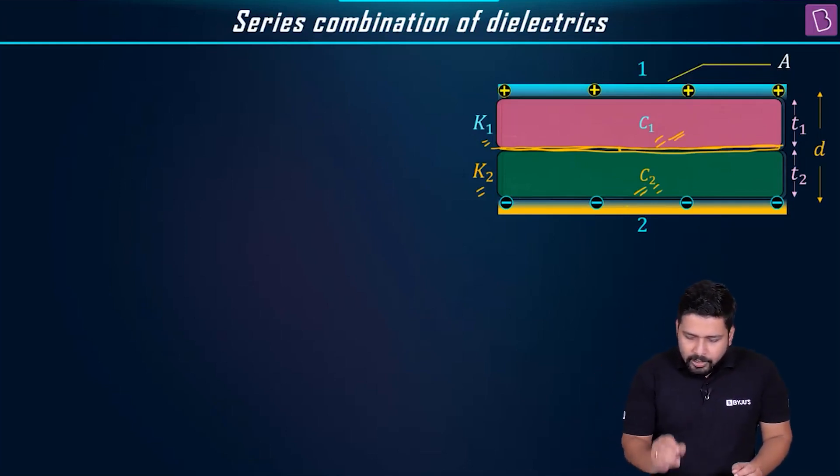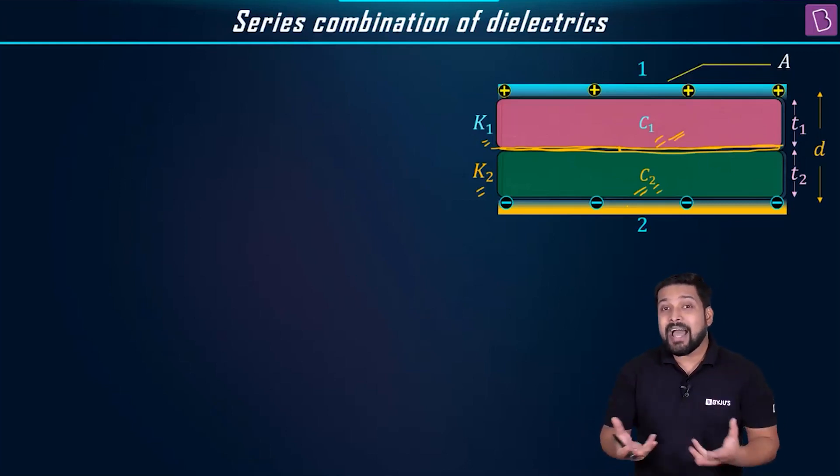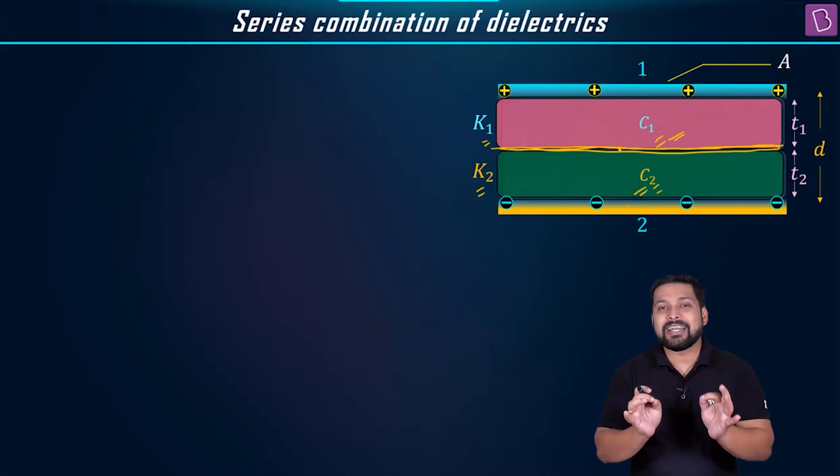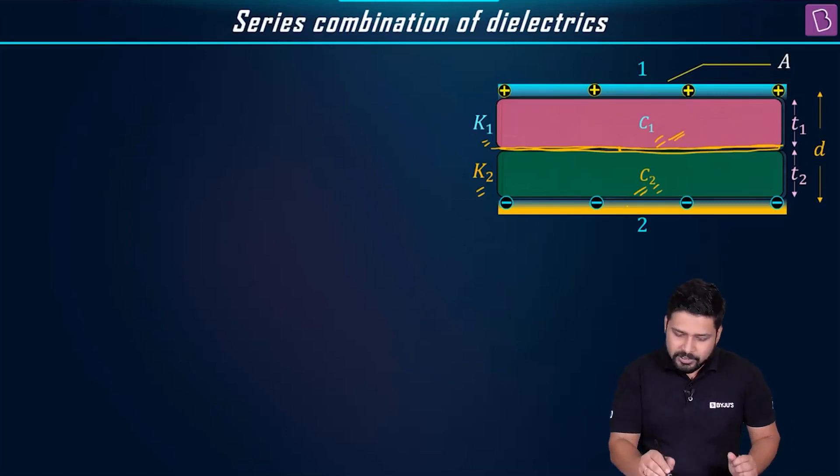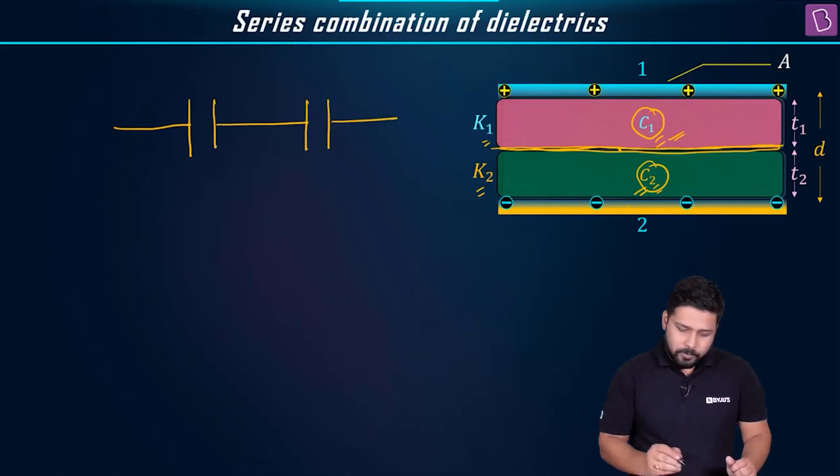In this particular case, the dielectric slabs are parallel to the plates itself. When this happens, we will interpret or take it as the series connection of the capacitors, which means these two capacitors I'll imagine to be connected in series. This is equivalent to having two capacitors like this connected in series.